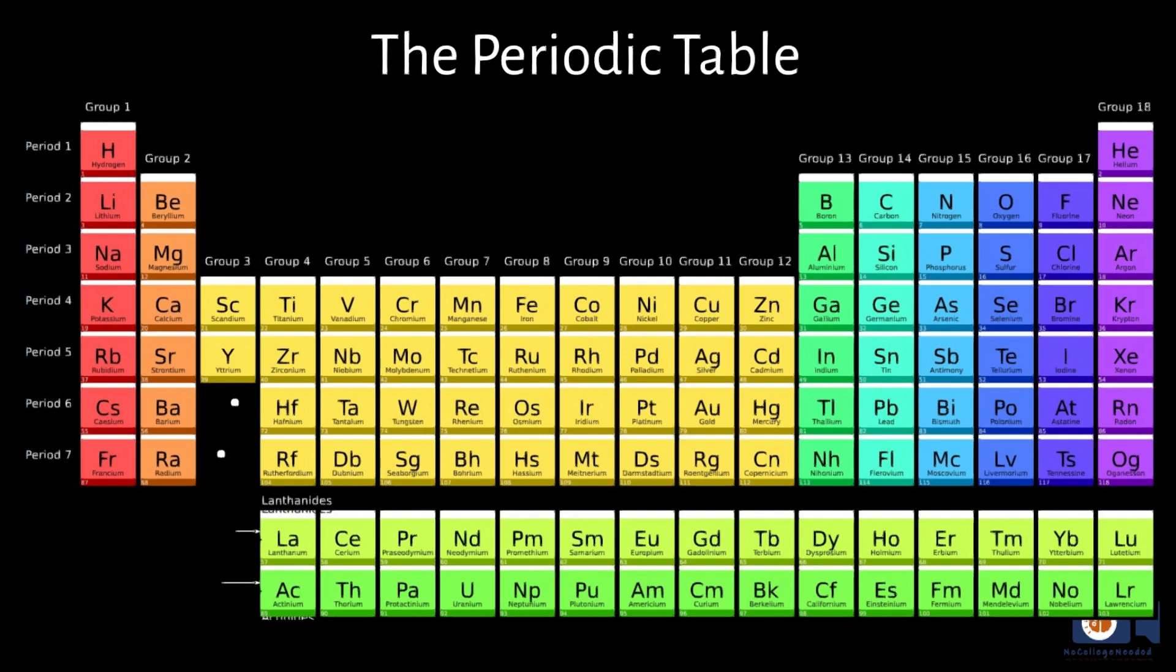The first version of the Periodic Table was proposed by Russian chemist Dmitry Mendeleev in 1869, and has since been revised and expanded as new elements have been discovered.